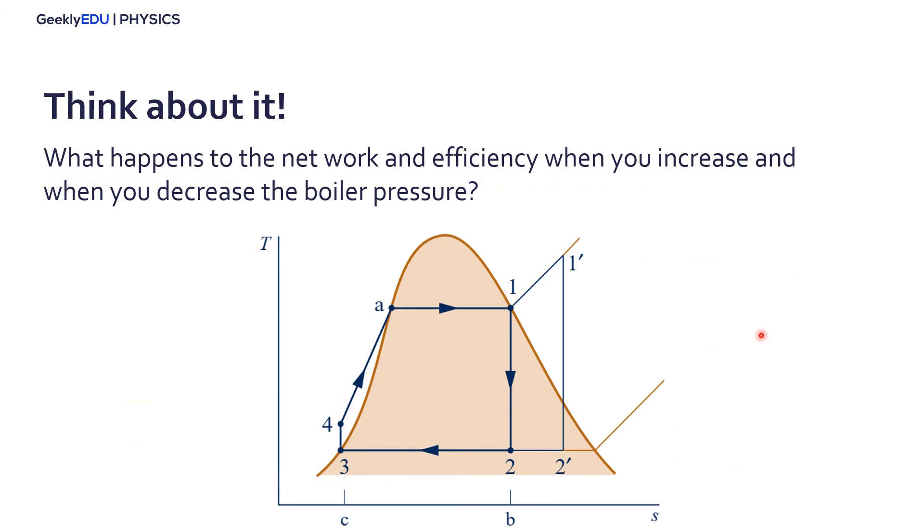Alright, so now it's your turn to think about the cycle and everything we've discussed here. So take a look in the TS diagram again, and think about what happens to the network and efficiency, the thermal efficiency, when you increase and when you decrease the boiler pressure.